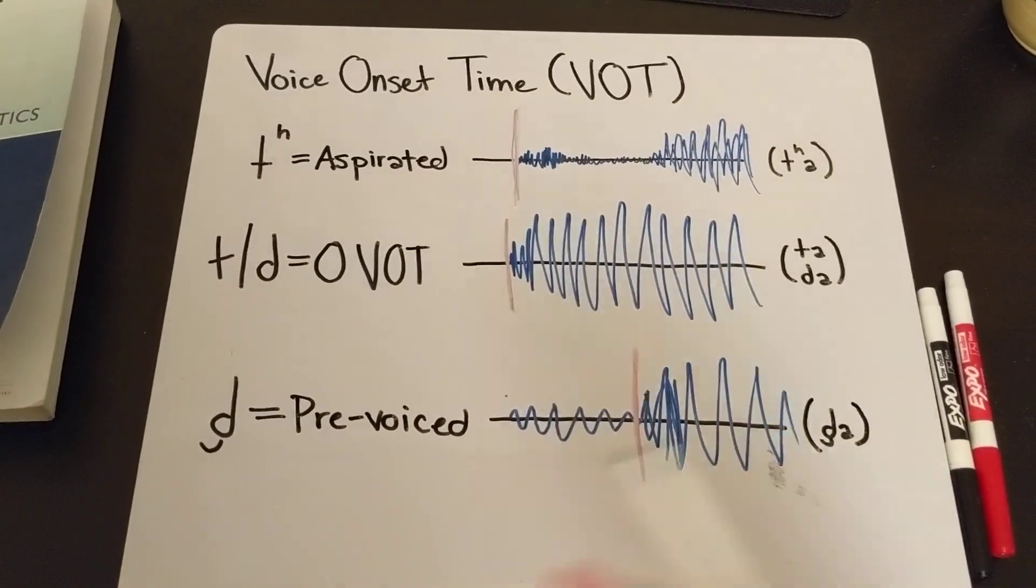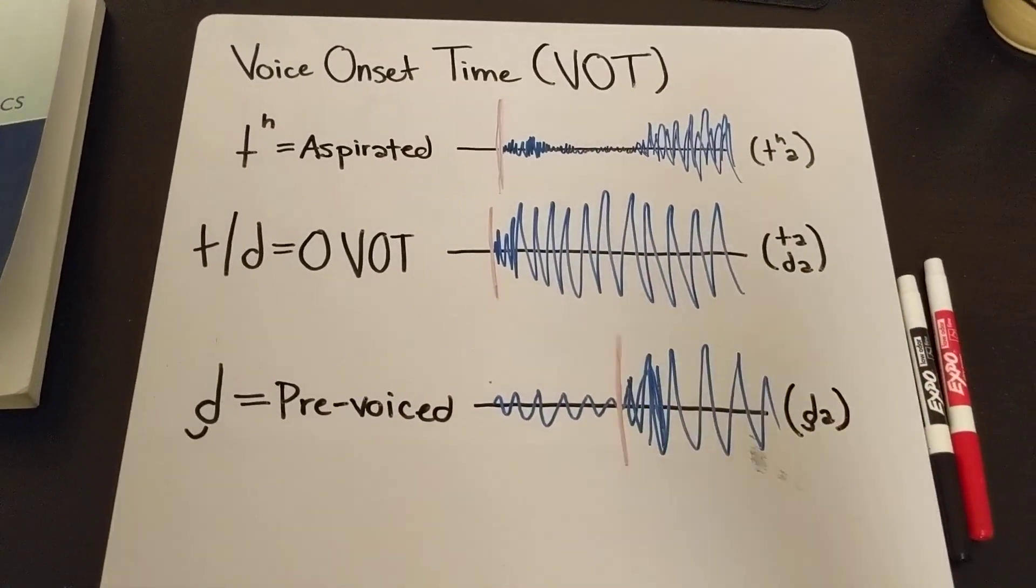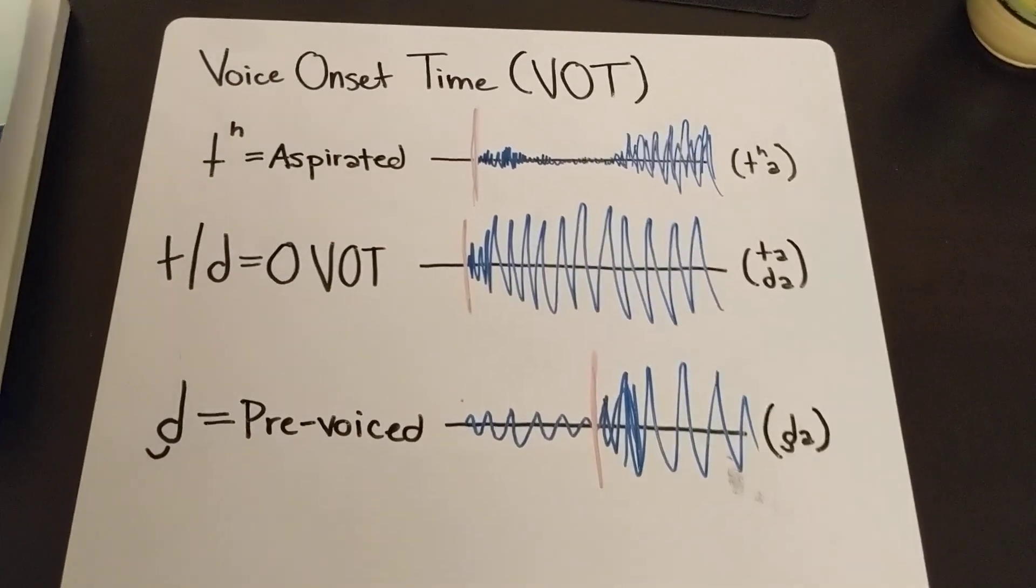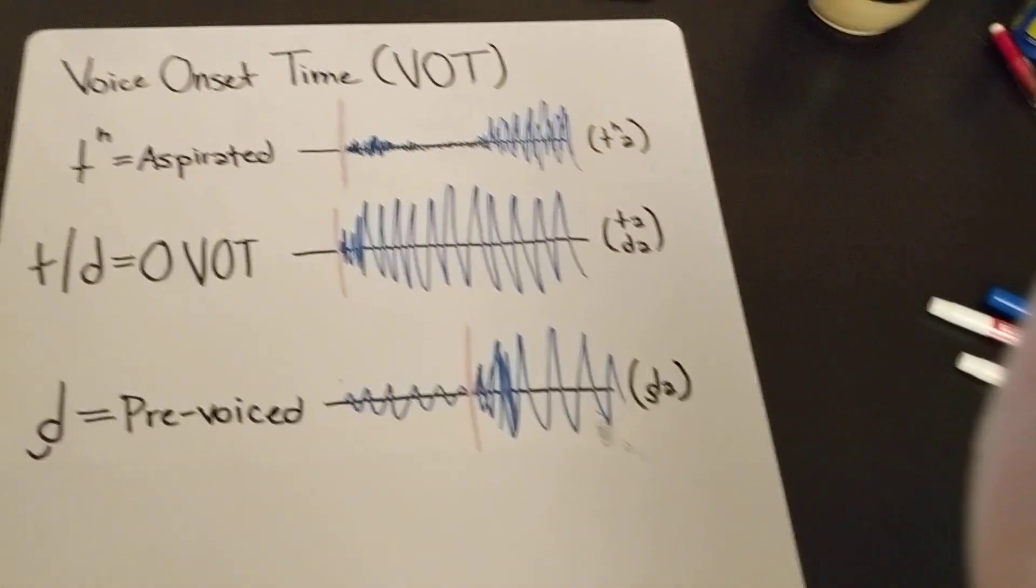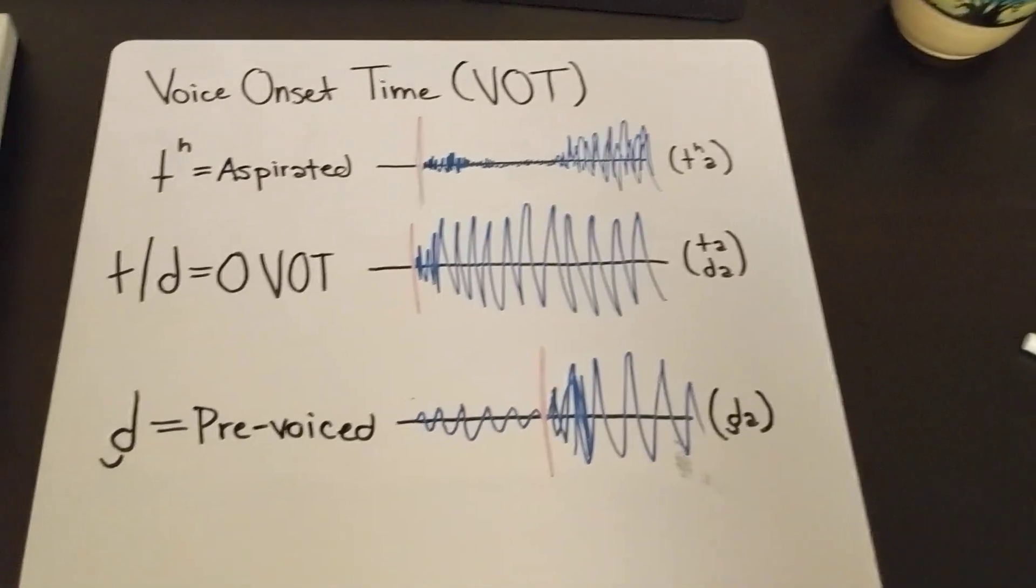All right, so one place where languages vary quite a bit, which is a pretty interesting and easy thing to look at in terms of their phonetics and phonology, is in this variable called voice onset time.